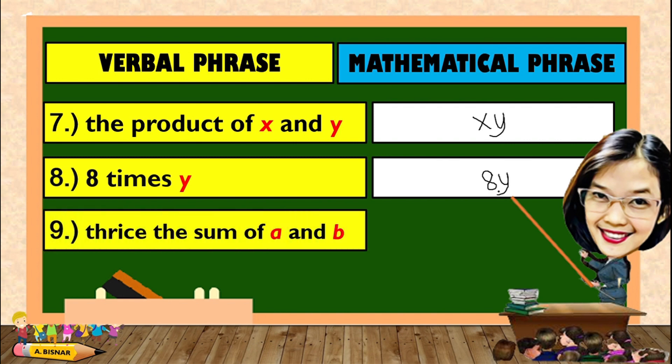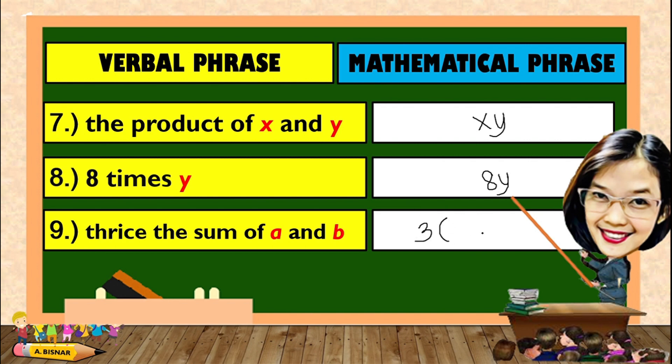Next, thrice the sum of A and B. Thrice means 3 times. 3 times of what? 3 times of the sum of A and B. So, as you observe in here, it is not just multiplication. Because there is also addition in here.